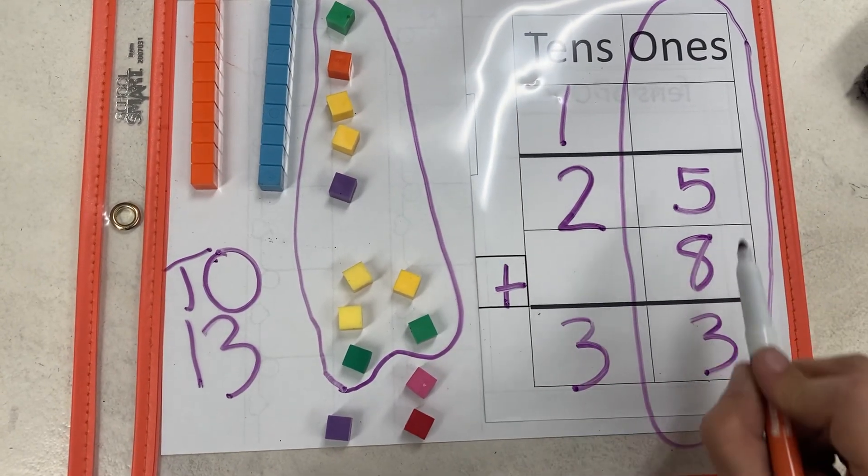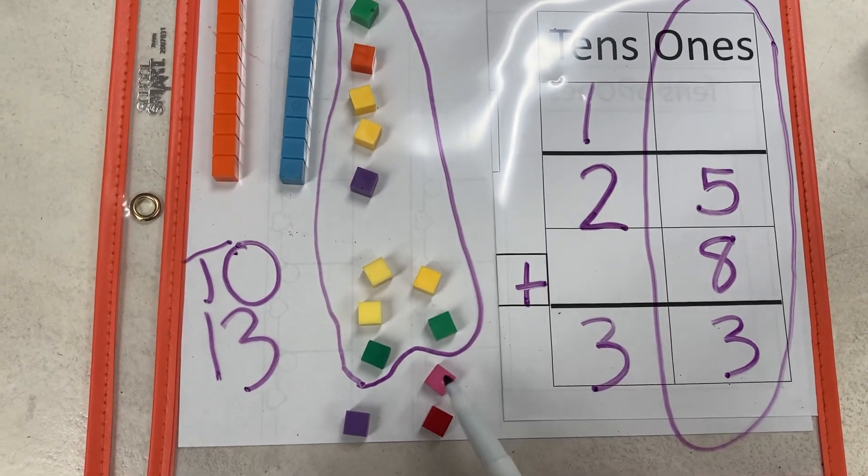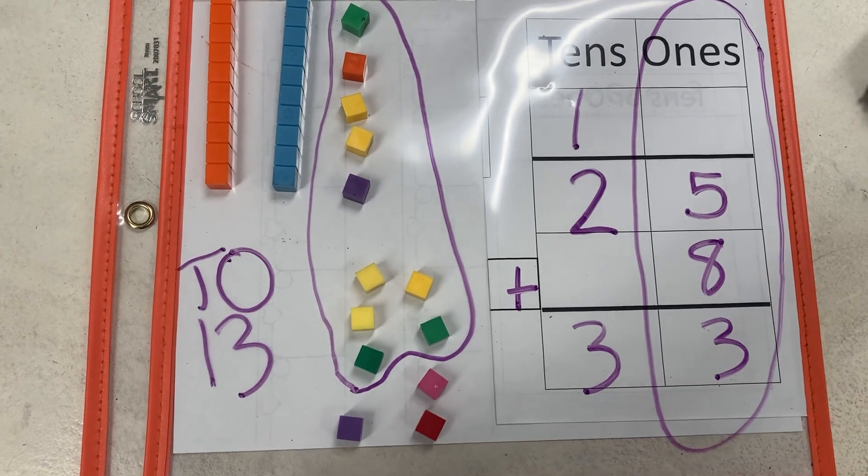So 25 plus 8 is 33. Let's check that. 10, 20, 30, 31, 32, 33. 1, 2, 3, 33.